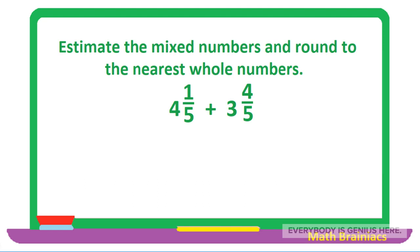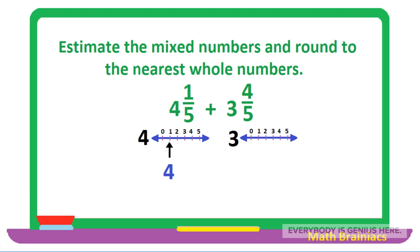Let us work on this example so that you will be guided. Estimate the mixed numbers and round to the nearest whole numbers: 4 and 1 over 5 plus 3 and 4 over 5. We are going to represent the fractions through a number line, apportioned according to the denominator. The first mixed number is 4 and 1 over 5, so the arrow will point to number 1 on the number line. Since 1 over 5 is much smaller than the denominator, it rounds down to 0, so 4 plus 0 is still 4.